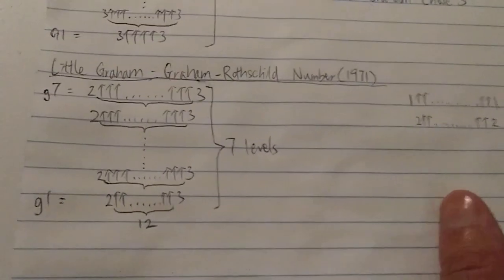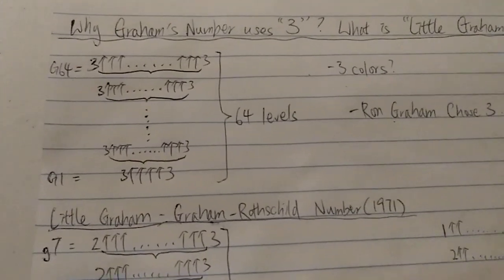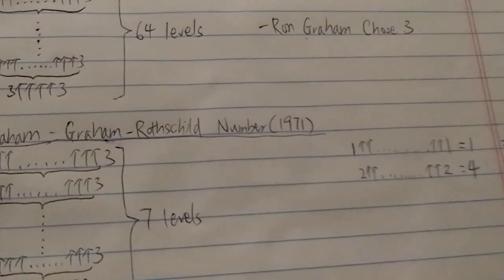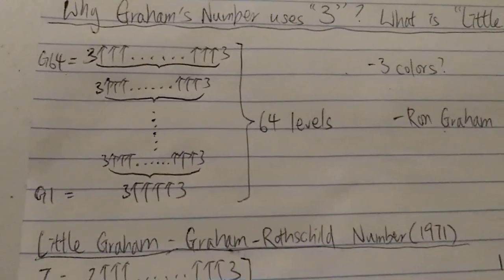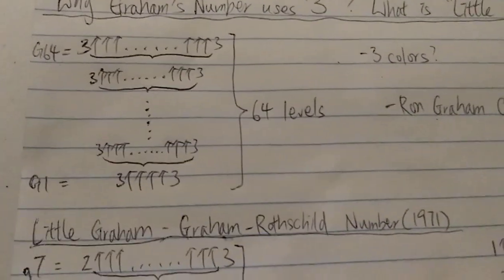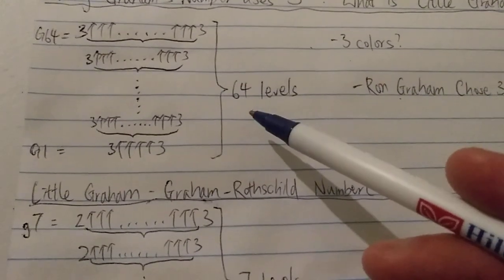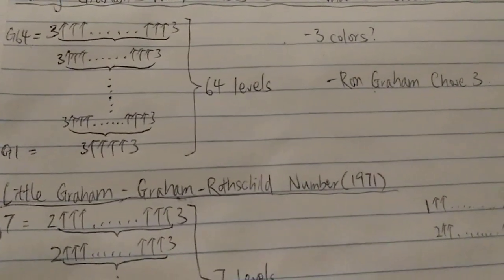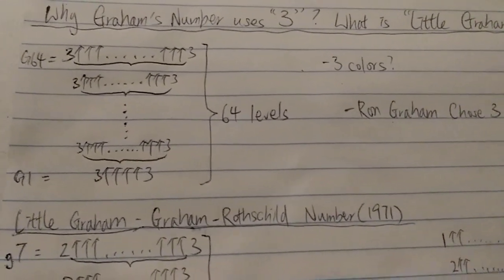The reason Ron Graham made up this new Graham's number is basically to make it easier for people to understand. He thought the original was too difficult to explain. He also wanted his new number to be bigger than the original. Since the g1 of the new number is smaller, to make the overall number bigger he needed more levels — which is why he chose 64 levels.